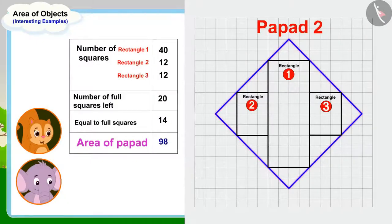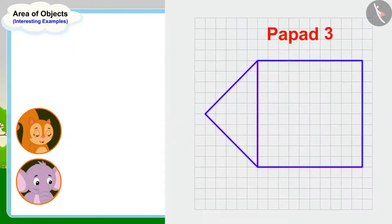Appu, the area of this papar is 98 square centimeters. Chanda said excitedly, now all we have to do is to find out the area of this last papar and then we will know which of these papars is the largest.